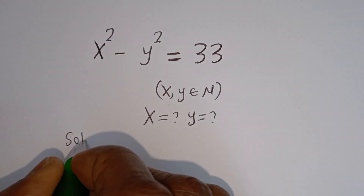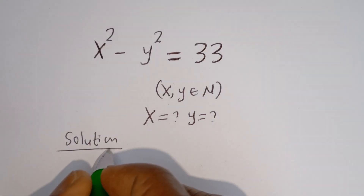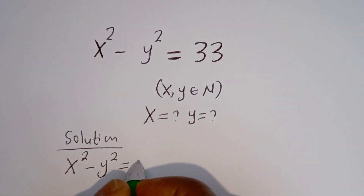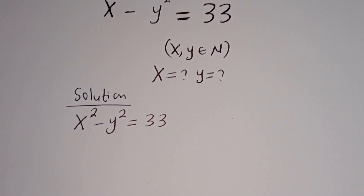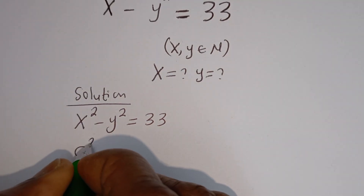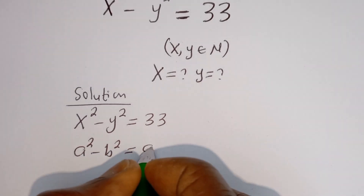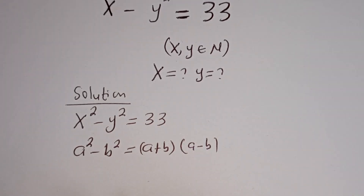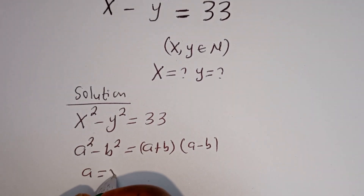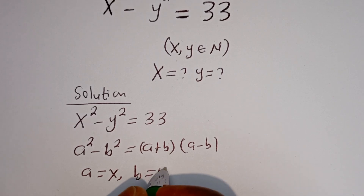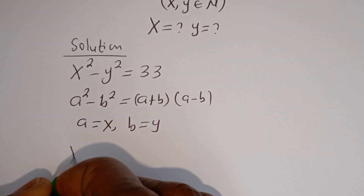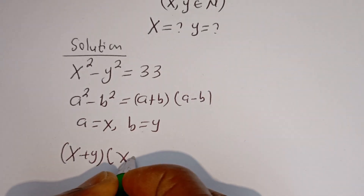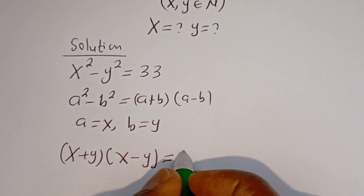Solution. We have the given equation: X squared minus Y squared is equal to 33. Take note that if you have A squared minus B squared, this is equal to (A + B)(A - B). Where A is equal to X and B is equal to Y, this can be written as (X + Y)(X - Y) = 33.